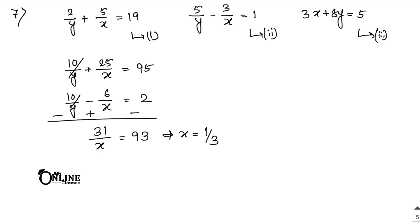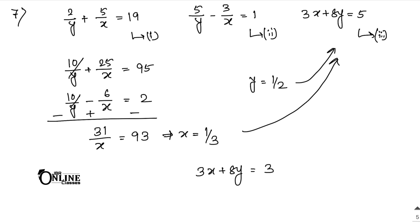With x equals 1/3, substitute into equation 1 to find y equals 1/2. To verify, check if x equals 1/3 and y equals 1/2 satisfy the third equation: 3 × (1/3) plus 8 × (1/2) equals 1 plus 4 equals 5. This matches the right-hand side, so the three equations are simultaneously satisfied.